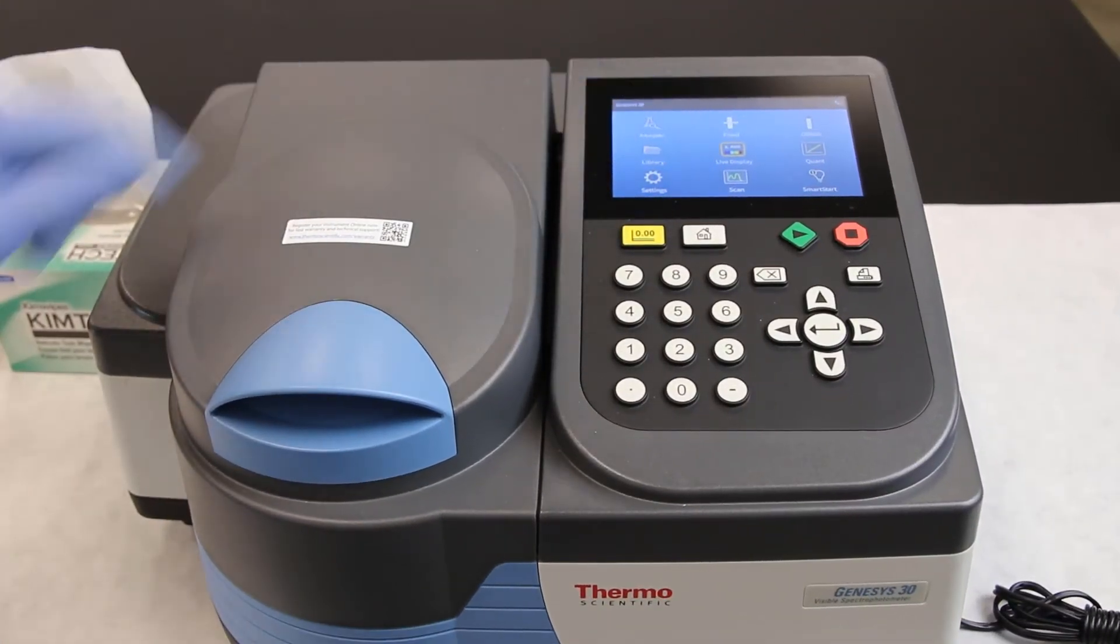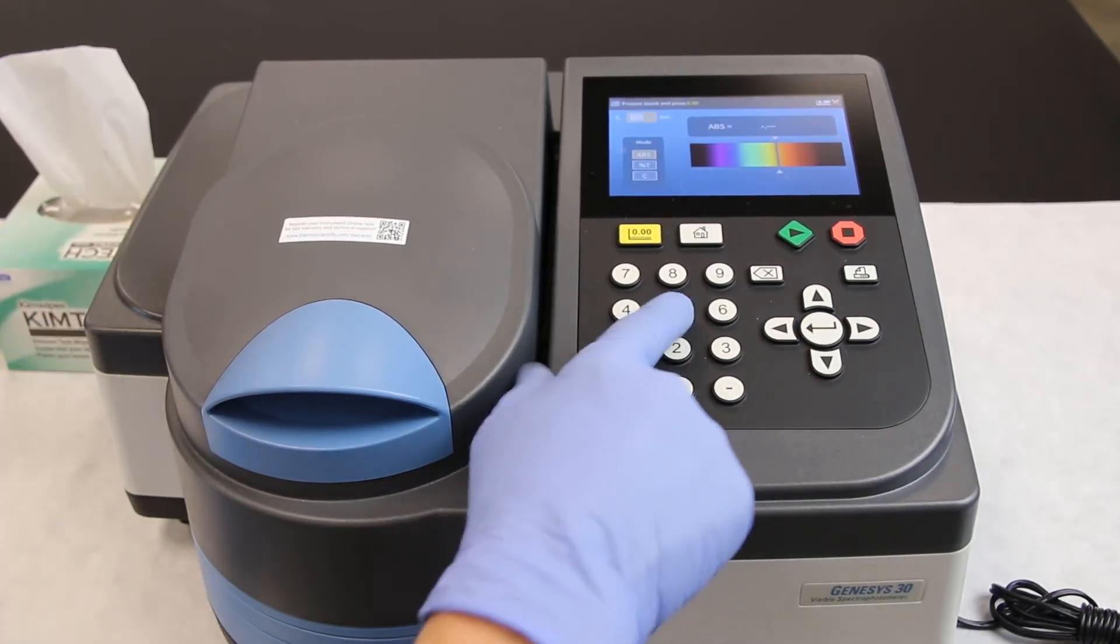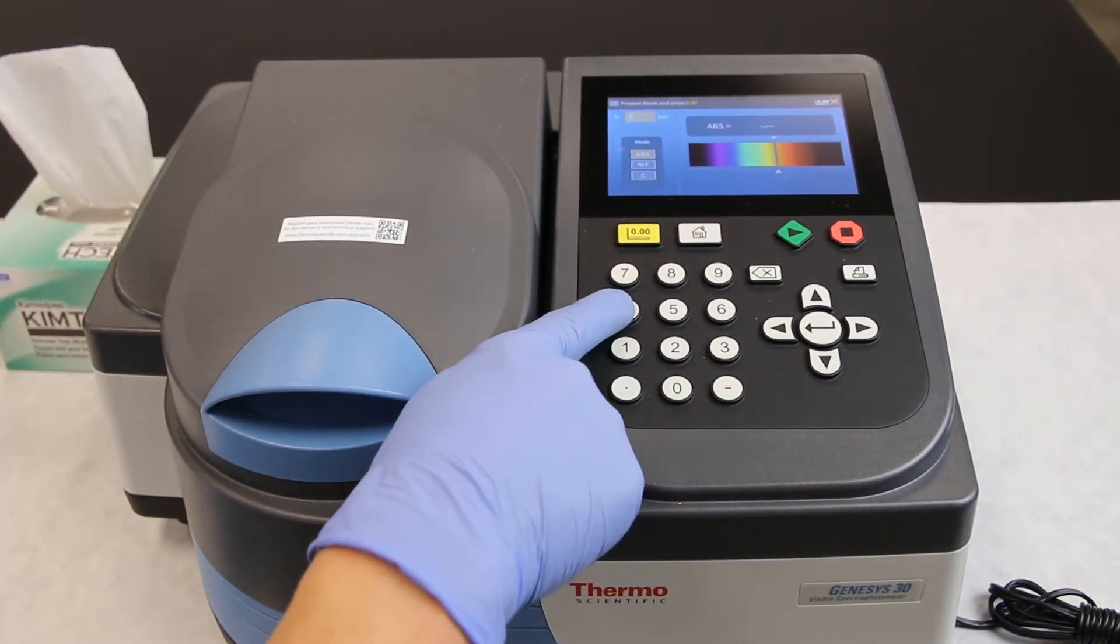Set the spectrophotometer to 540 nm, because this is the optimal absorbance of sugars reduced by DNS.